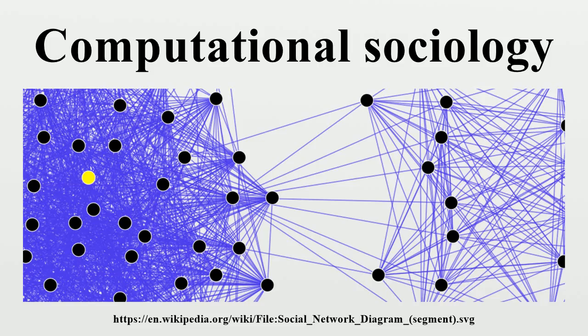Although the subject matter and methodologies in social science differ from those in natural science or computer science, several of the approaches used in contemporary social simulation originated from fields such as physics and artificial intelligence. Some of the approaches that originated in this field have been imported into the natural sciences, such as measures of network centrality from the fields of social network analysis and network science.